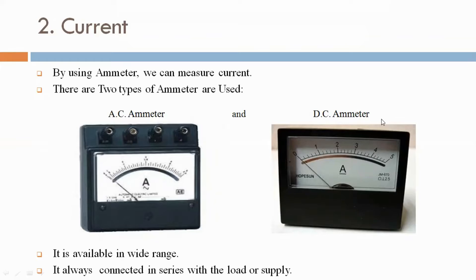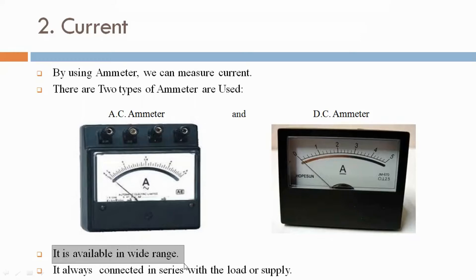Similar to the voltmeter, the ammeter's indication and symbol is sinusoidal for AC. The AC ammeter measures AC current and the DC ammeter measures DC current. It is available in a wide range and is always connected in series with the load or supply.